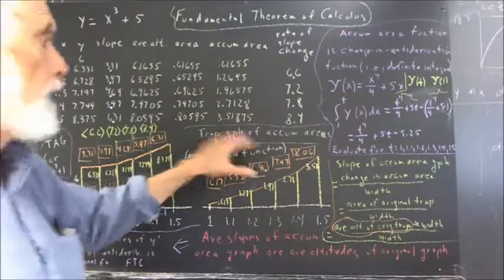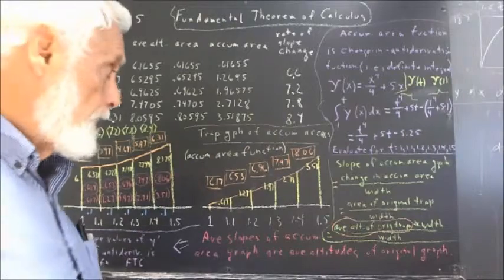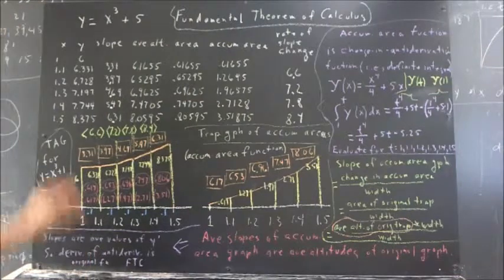Now what we have here, this trapezoidal graph is a graph of our accumulated area function. We don't have the exact accumulated area, but we used a pretty small increment.